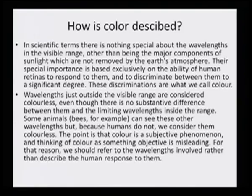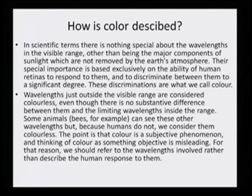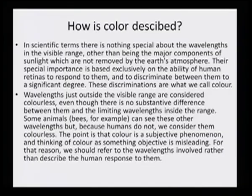How is color described? In scientific terms, there is nothing special about wavelengths in the visible range other than being the major component of sunlight not removed by the earth's atmosphere. Their special importance is based exclusively on the ability of human retinas to respond to them and to discriminate between them to a significant degree. This discrimination is what we call color. It is because of the eye, which is able to perceive this particular wavelength range from 400 to 700 nanometers, that color is observed. Wavelengths just outside the visible range are considered colorless, and some animals can see these other wavelengths, but because humans do not, we consider them colorless.